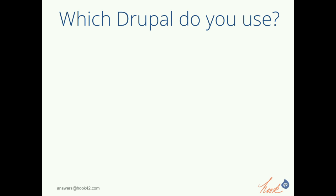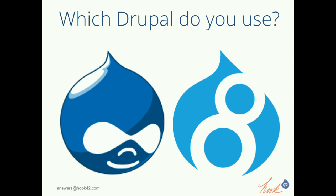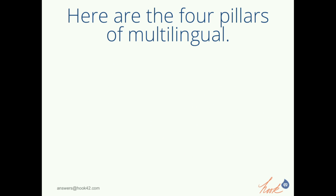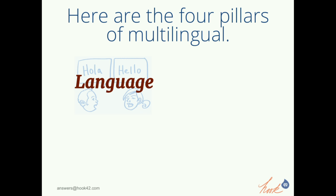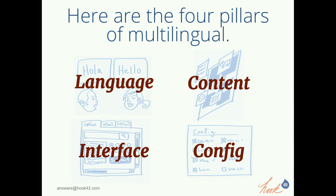Now we want to get a sense of what Drupal you're using. Drupal 7, show of hands. Drupal 8 — fair number. It looks like a lot of people here are looking to use Drupal 8. For those who were in Gabor's session, we're going to cover the four pillars of multilingual quickly again. First there's language, then the user interface, then content, and then config. We'll go into detail through the deck on all of these different areas.